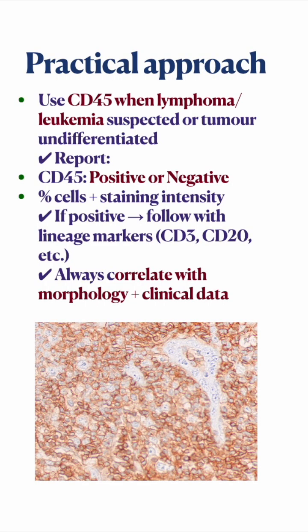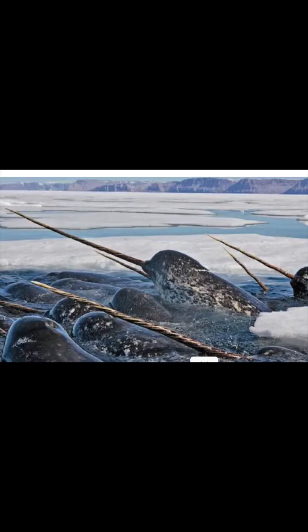Practically, CD45 is used when you are suspecting a lesion to be a lymphoma, leukemia, or any tumor of hematopoietic origin — reported as positive or negative. As with all IHC markers, you must always correlate it with your clinical data, radiological data, and morphology.